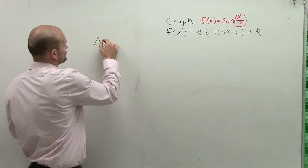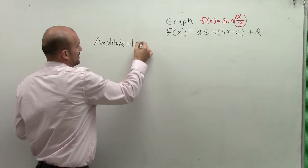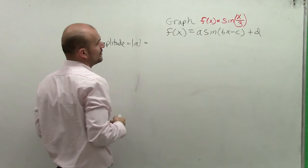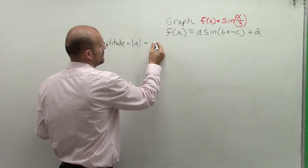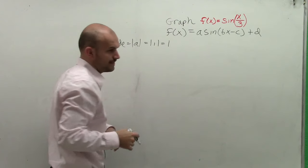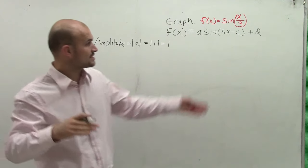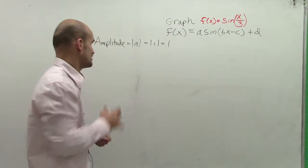So the amplitude, remember, was the absolute value of a, which in this case, we have a 1 multiplied by my value. So it's absolute value of 1, which is just equal to 1. That means my graph is going to go up 1 and down 1, depending if there's no vertical translations, which we don't have a vertical transformation.